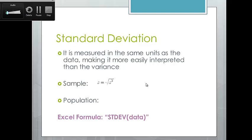Variance is a bit unusual because of that squaring — it would end up expressed in dollars squared, which isn't meaningful. Standard deviation is a measure in the same units as the data, so it's more easily interpreted. For our sample, take the square root of the variance to get the standard deviation. The notation: for the sample, variance is s² and standard deviation is s; for the population, variance is σ² and standard deviation is σ. The Excel formula is STDEV.